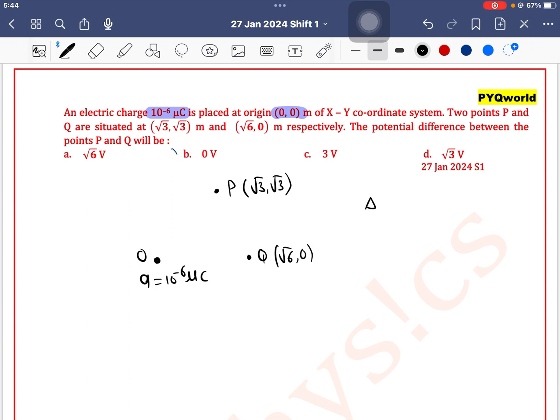So what is the formula for potential difference? Potential difference is Vp minus Vq and we can write V equals Kq by R. So here in both scenarios K and Q are the same.